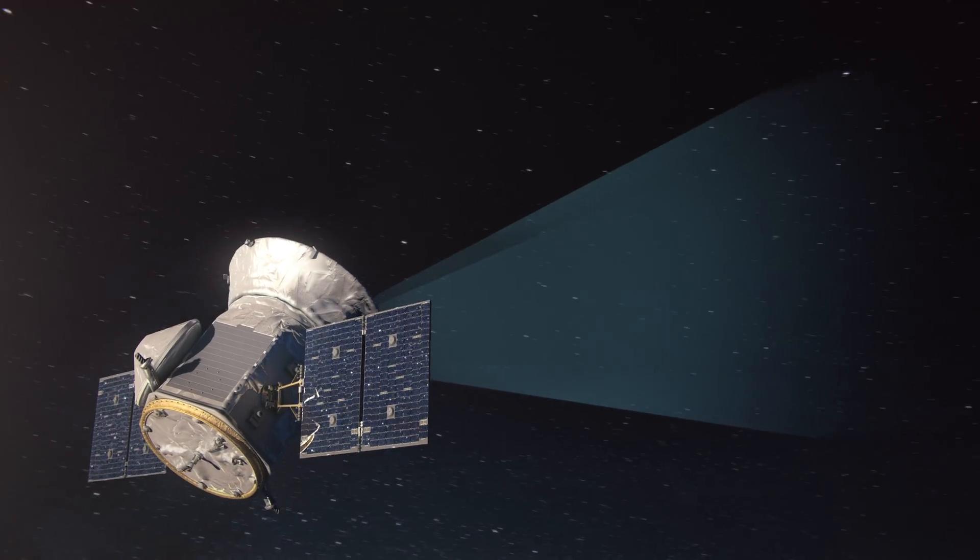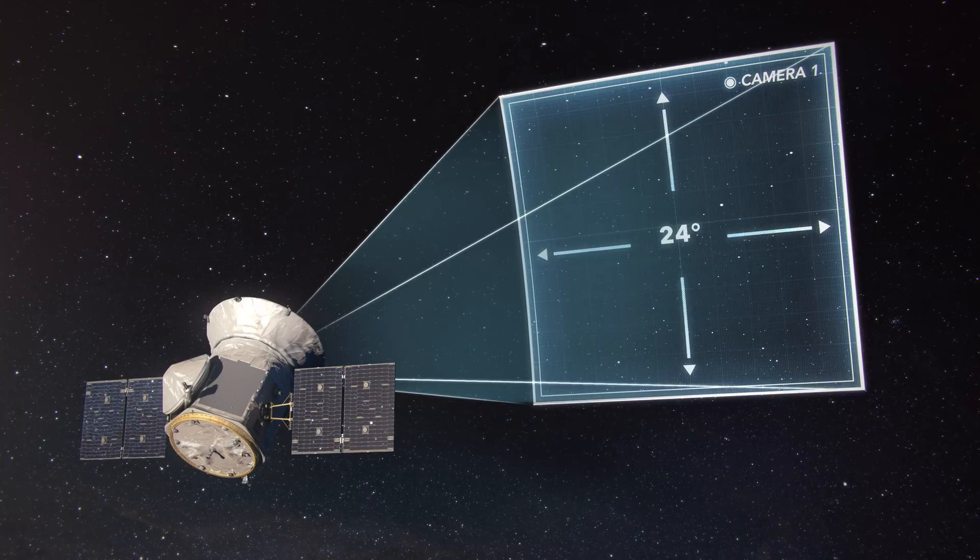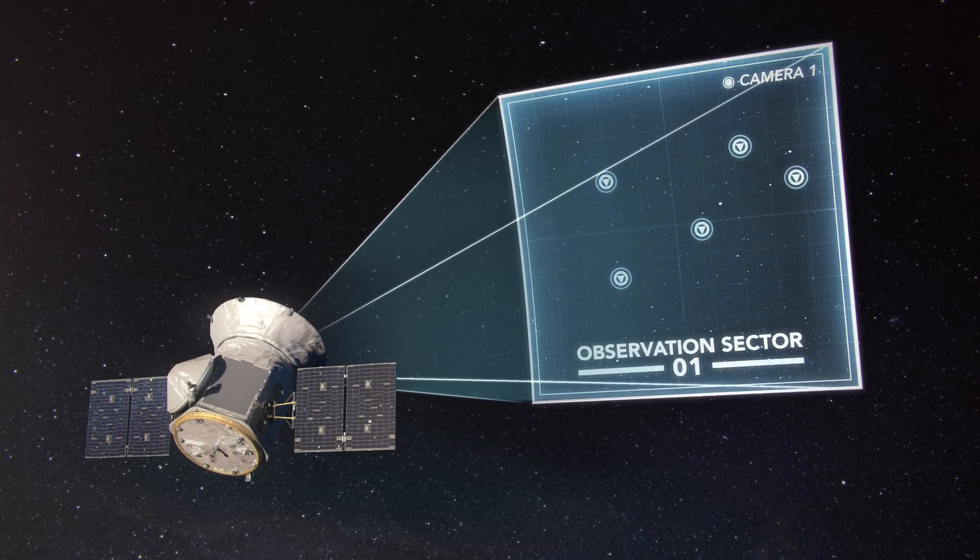Each of TESS' cameras has a 16.8 megapixel sensor covering a square 24 degrees wide, large enough to contain an entire constellation.